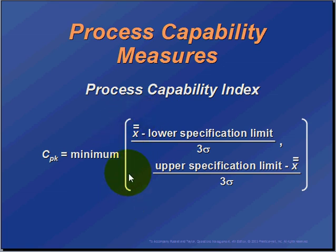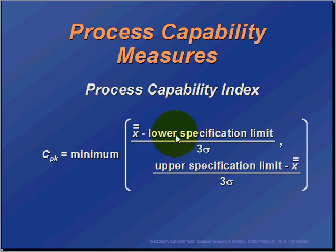We're going to look at the minimum — the lesser of these two values, the upper and the lower. The lower would be: X-bar-bar (our average) minus our lower specification limit, divided by three sigma (standard deviation). And the upper is: our upper specification limit minus X-bar-bar, divided by three sigma as well.